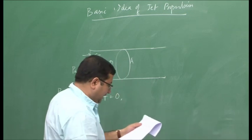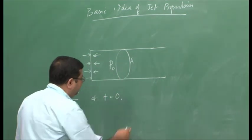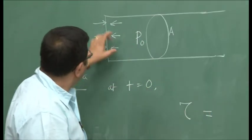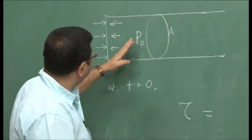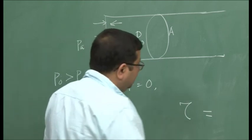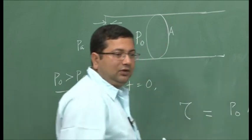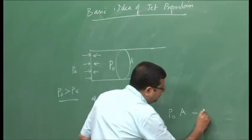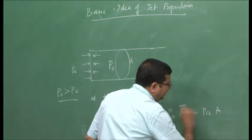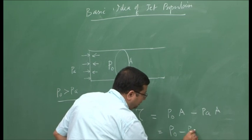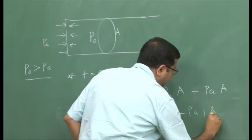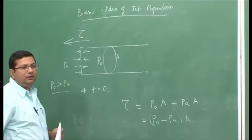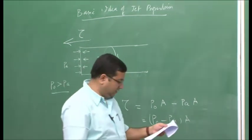If we calculate that force — let us say that force is given by tau — then that force equals the pressure forces acting on that face because of pressure P_naught, which is P_naught times A, where A is the cross-sectional area. The pressure forces acting from outside equal P_a times A. Therefore, the net force is (P_naught minus P_a) times A. So there is a net force acting on this system towards the left.